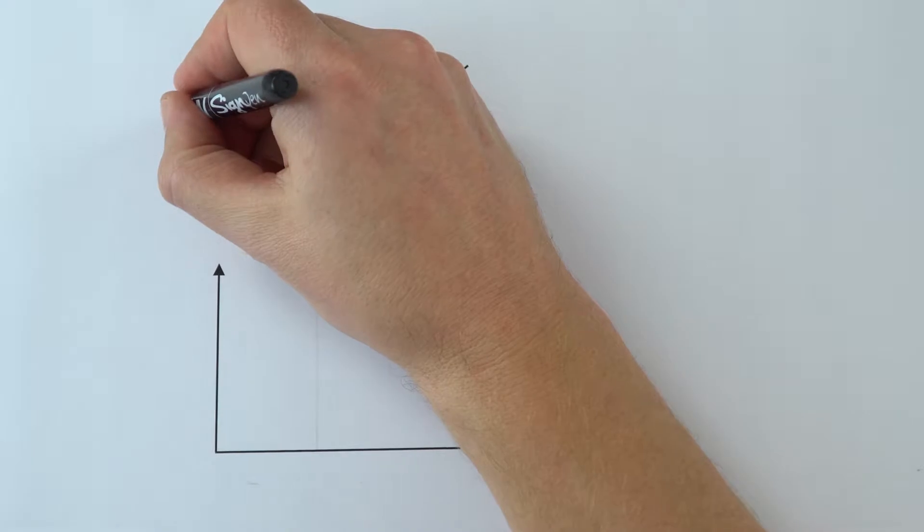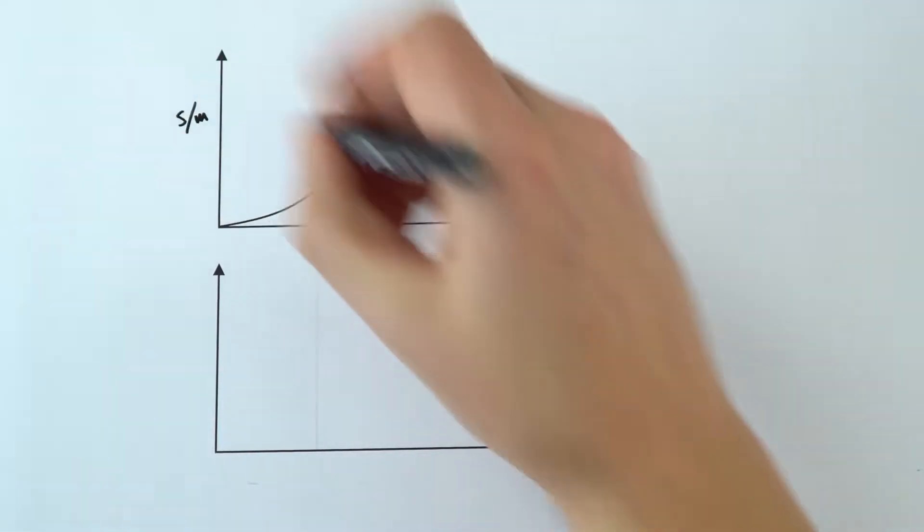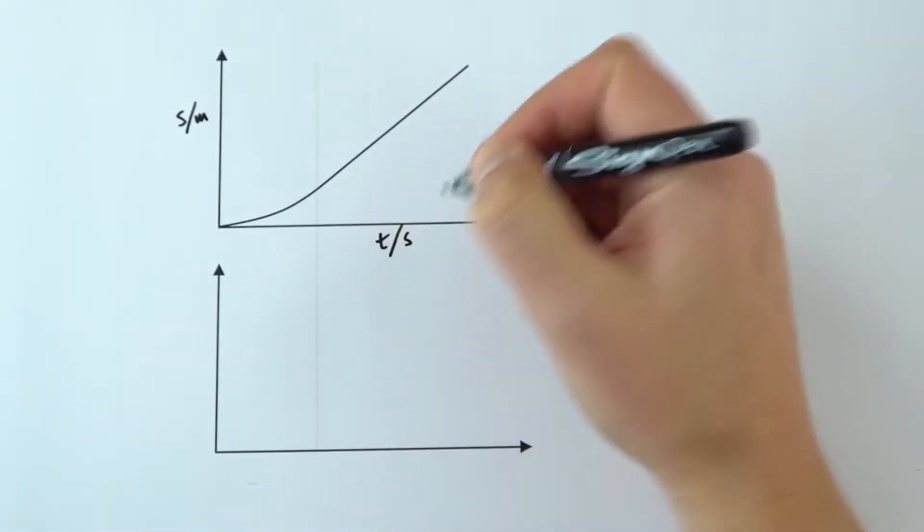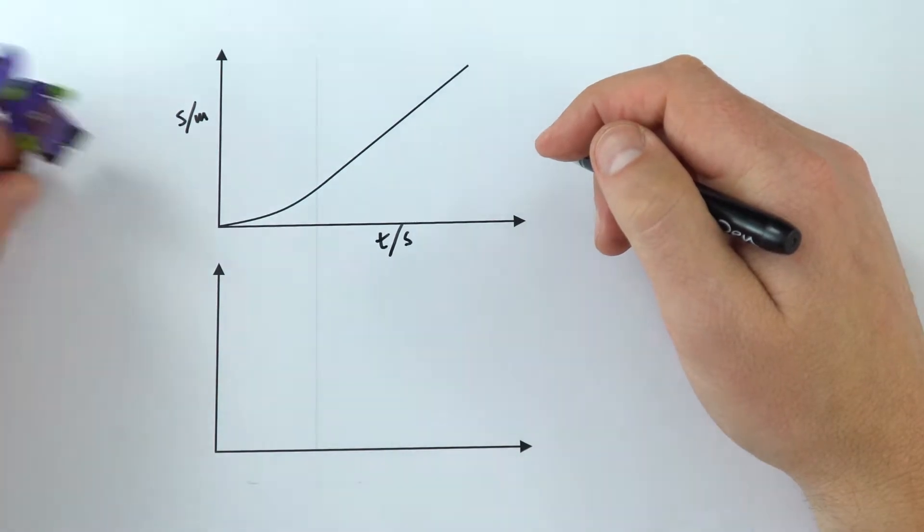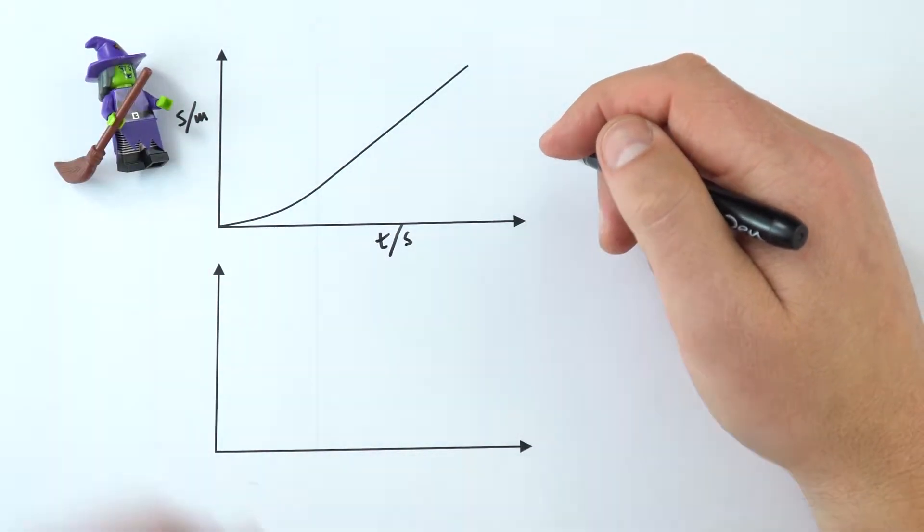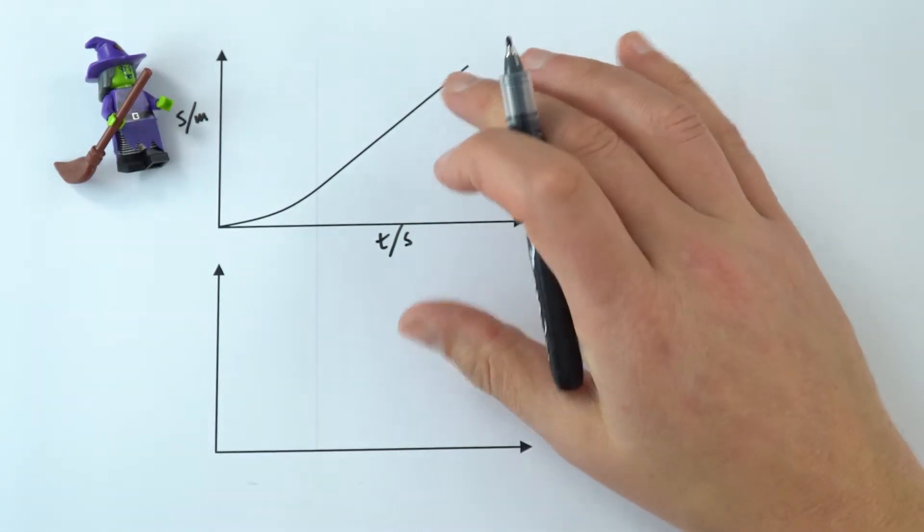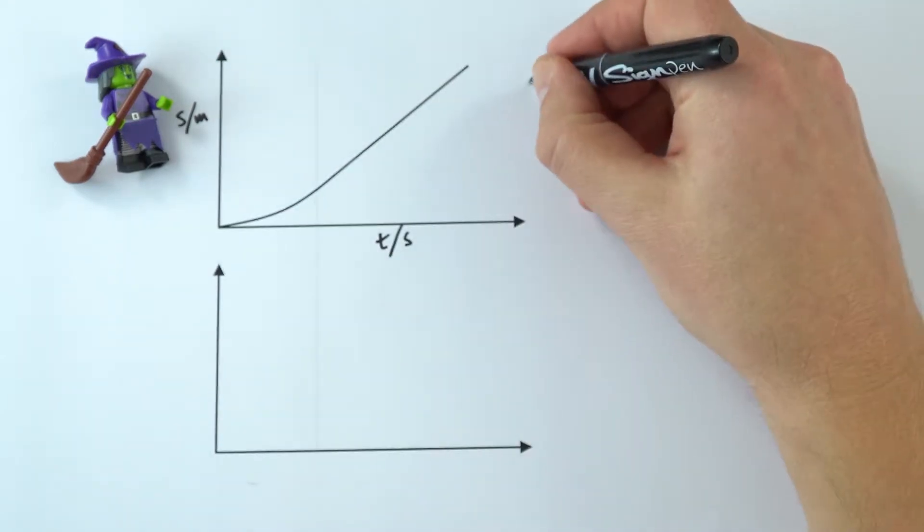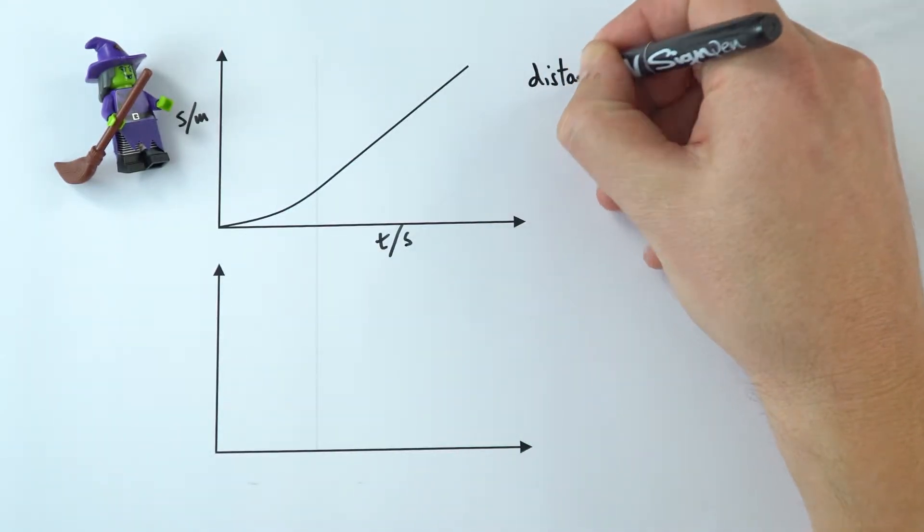Now this top graph up here might represent the distance that an object has traveled over a certain amount of time. It could be any object, I used a witch in some of the previous videos, but effectively what we're looking at is how the distance is related to time, and this one here is a distance-time graph.